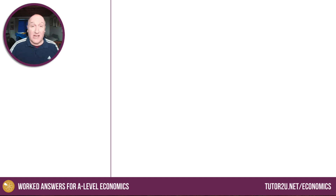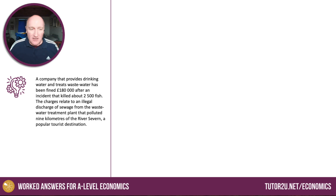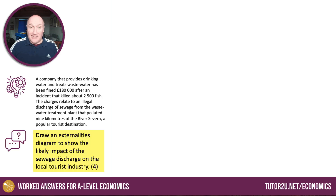You'll be often asked to draw a diagram based on a context. So here's the context: a company that provides drinking water and treats waste water has been fined heavily for an incident that killed thousands of fish — illegal discharge of sewage from the waste water treatment plant that polluted a substantial stretch of the River Severn. Highly topical, of course — river pollution from privatised water utilities. Draw an externality diagram to show the likely impact of the sewage discharge on the local tourist industry.